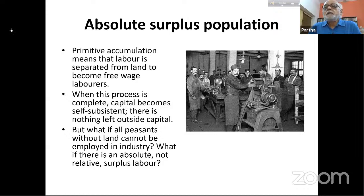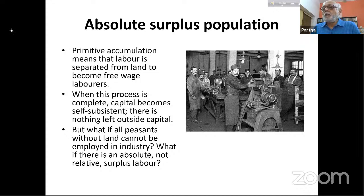Primitive accumulation means labor is separated from land to become free wage laborers. When this process is complete, capital becomes self-sustaining — it simply reproduces itself through accumulation and does not need another outside sphere to break down anymore. Primitive accumulation is complete, and capital continues to reproduce itself through accumulation.